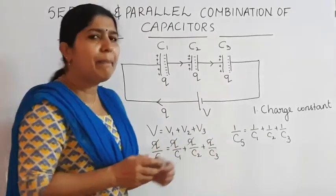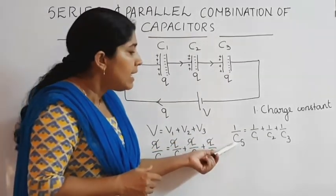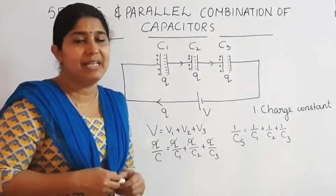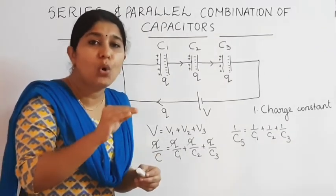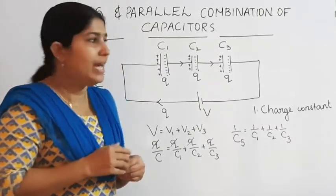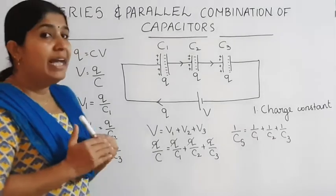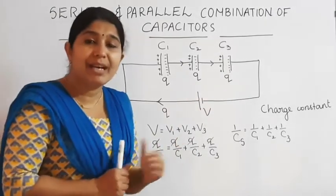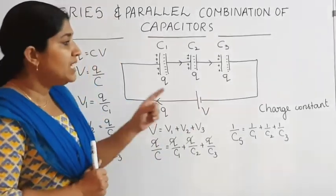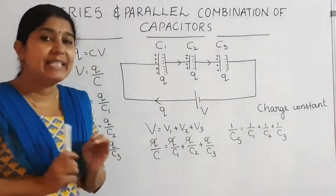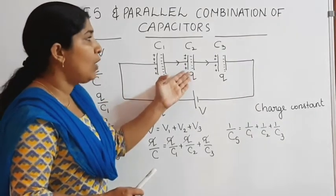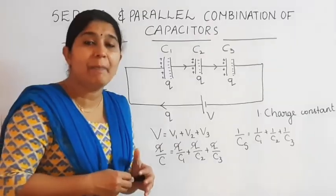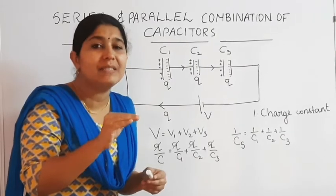The effective capacitance is the reciprocal of the sum of all these capacitors, so the effective capacitance is smaller than the smallest value. The important points regarding series combination: first, charge remains constant; second, voltage is divided according to the capacitance of the capacitor; third, effective capacitance is smaller than the smallest value.